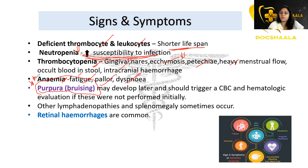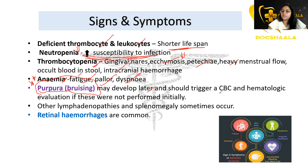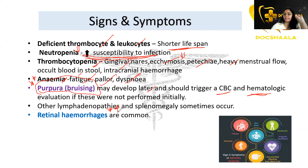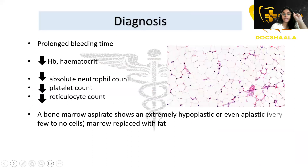Due to anemia there is fatigue, pallor, and dyspnea. Purpura is an important and characteristic finding of aplastic anemia — it is the only finding that clinically differentiates it from other kinds of anemia. It may develop later and should trigger a CBC or hematologic evaluation. Retinal hemorrhages are also common, and skin rash is a characteristic feature of aplastic anemia.